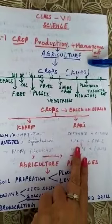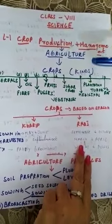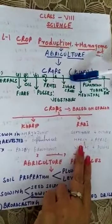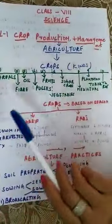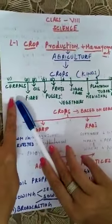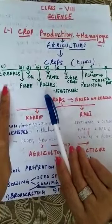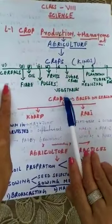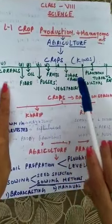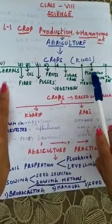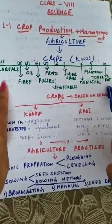First of all we have studied what agriculture is, then what are crops and the different kinds of crops. I have told you about cereal crop, fiber crop, oil crop, pulse crop, fruit crop, vegetable crop, sugar crop, medicinal crop, plantation crop, and tuber and root crop.